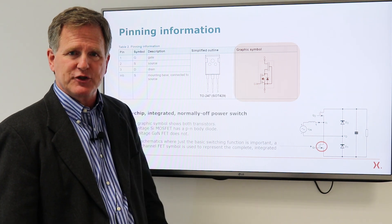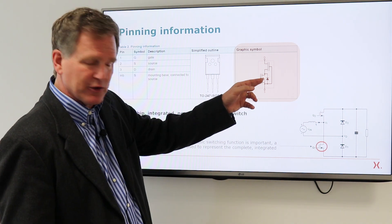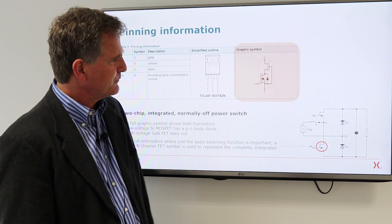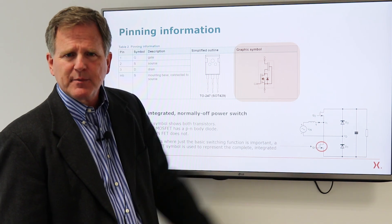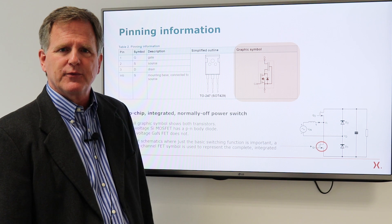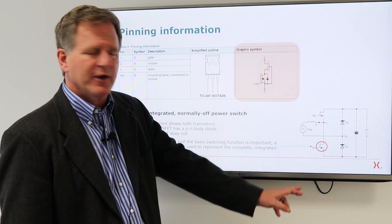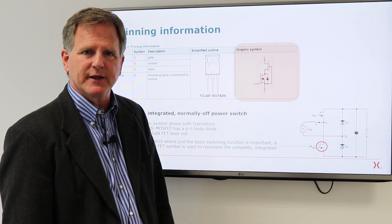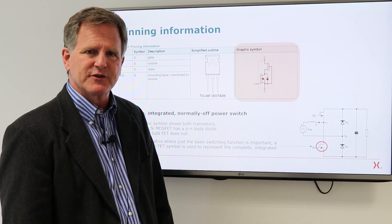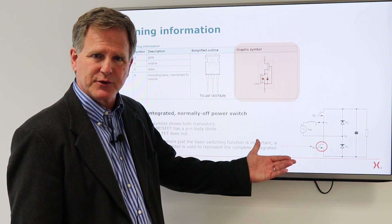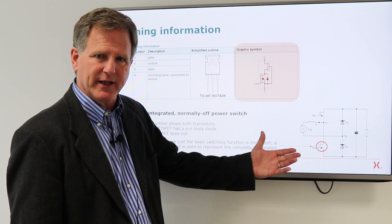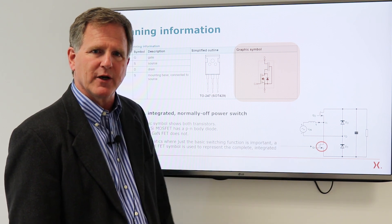The GAN HEMT has no PN junction. The channel, the current only flows in the channel. In system level schematics, where only the external functionality is important, we'll very often show this simplified symbol just to convey the idea of the external feature, the external functionality, an N channel normally off FET.